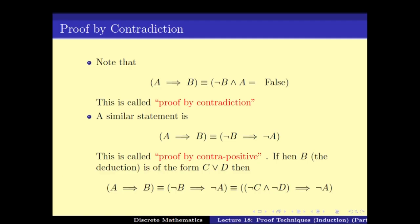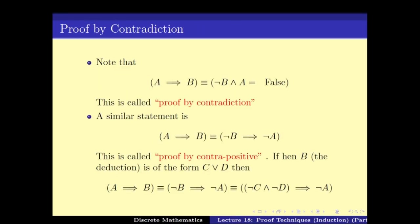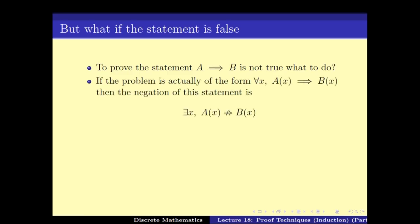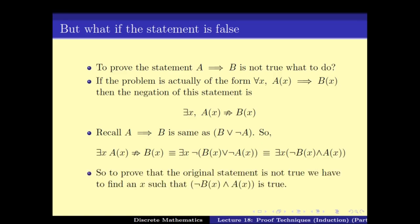So those were the various proof techniques. We also covered the proof technique called counter example, where if we have to disprove a statement A implies B, the idea is to produce a proof that A does not imply B. In other words, if the problem is of the form 'for all x, A implies B' and we have to prove the negation of it — that there exists x such that A holds but B doesn't hold — this is what we call proof by counter example.